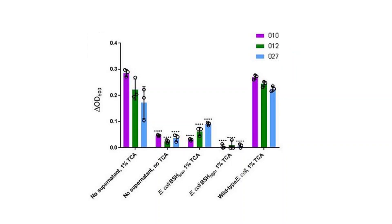However, we needed to be sure that BSH was a key function in these experiments and that the lack of germination was not due to an unknown factor being made by the bacteria. Colleagues at University College Cork sent us a genetically engineered E. coli which contained a BSH gene. Wild-type E. coli does not contain BSH genes and cannot degrade taurocholic acid. In these batch cultures, only the BSH-enhanced E. coli was able to prevent C. diff spores from germinating, again strengthening our claim that BSH is an important factor in C. diff infections.